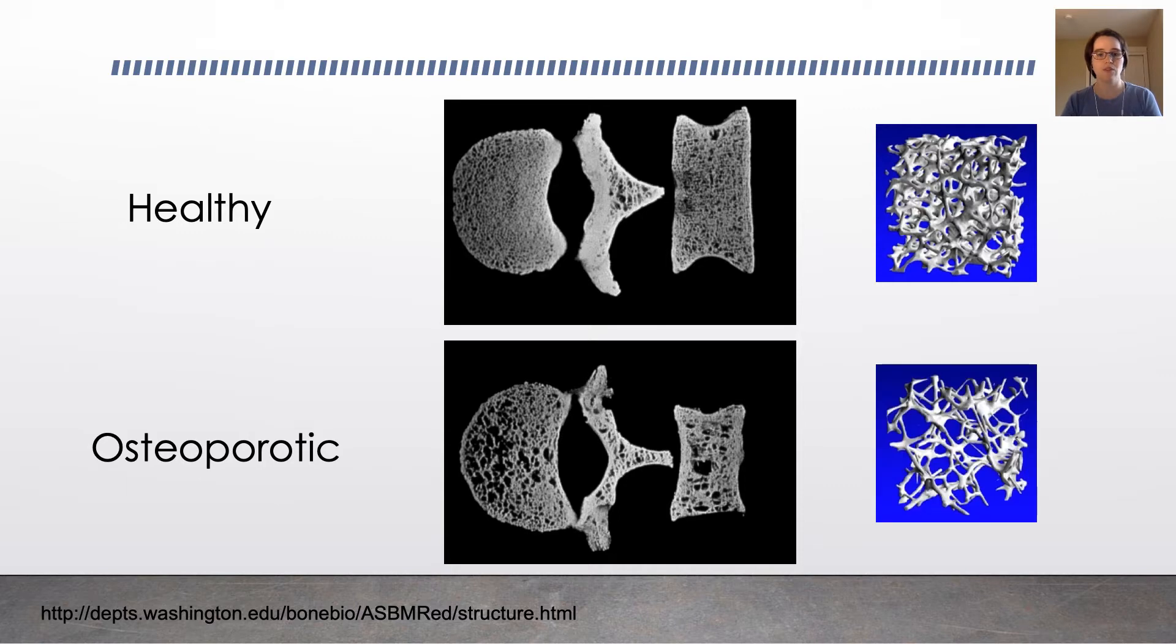If you were to do a three-dimensional rendering of the bone, it would have these spindle-shaped rods connecting the plates. And the plates themselves get pretty thin and very brittle-looking, very spindly-looking osteoporosis. And this is a really big problem mechanically.